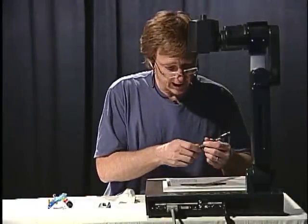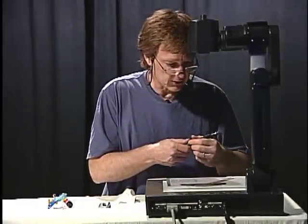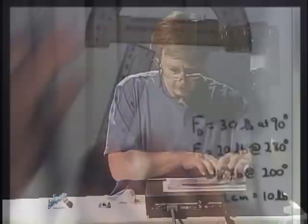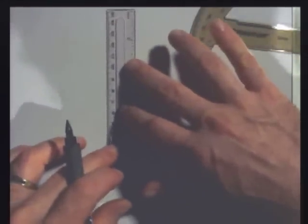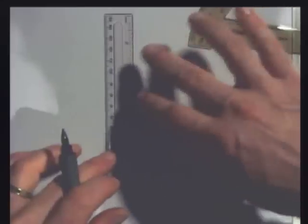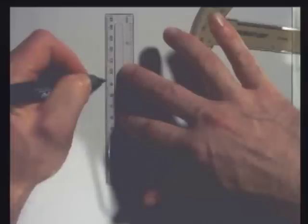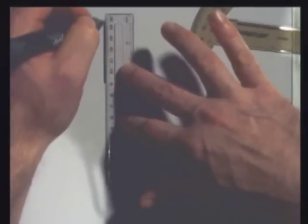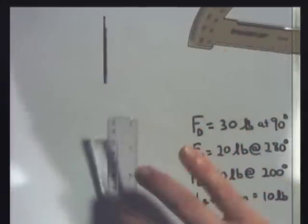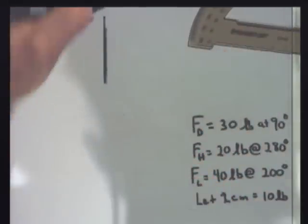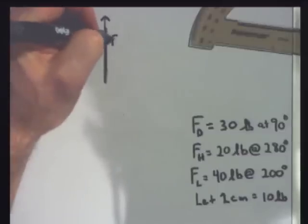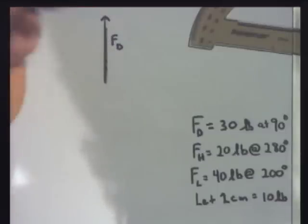So let's see, 30 pounds at 90 degrees. That would be 6 centimeters. So I'll go straight up 6 centimeters. I'll start right here and I'll go straight up 6 centimeters. Now, I'm going to put an arrow right where I finished. I'm going to label it FD for Darth Vader's force.